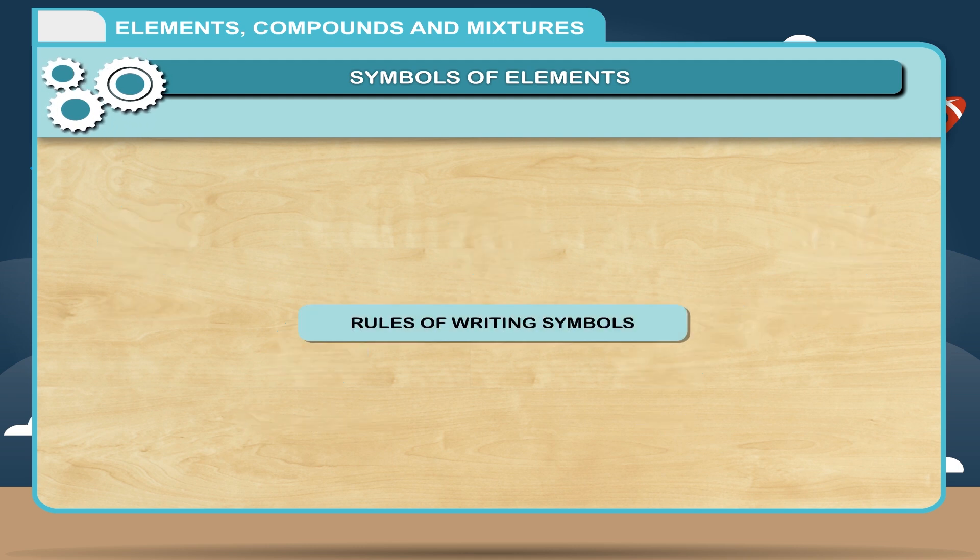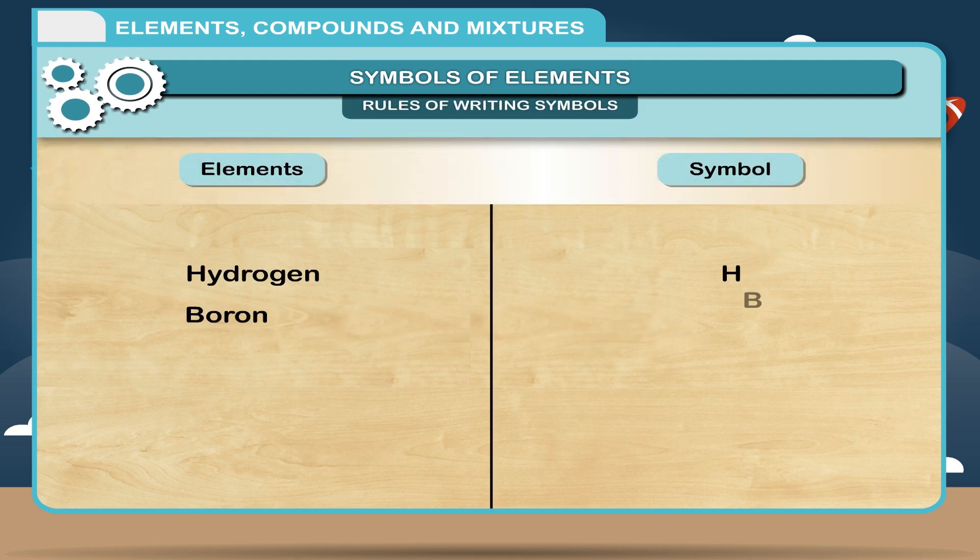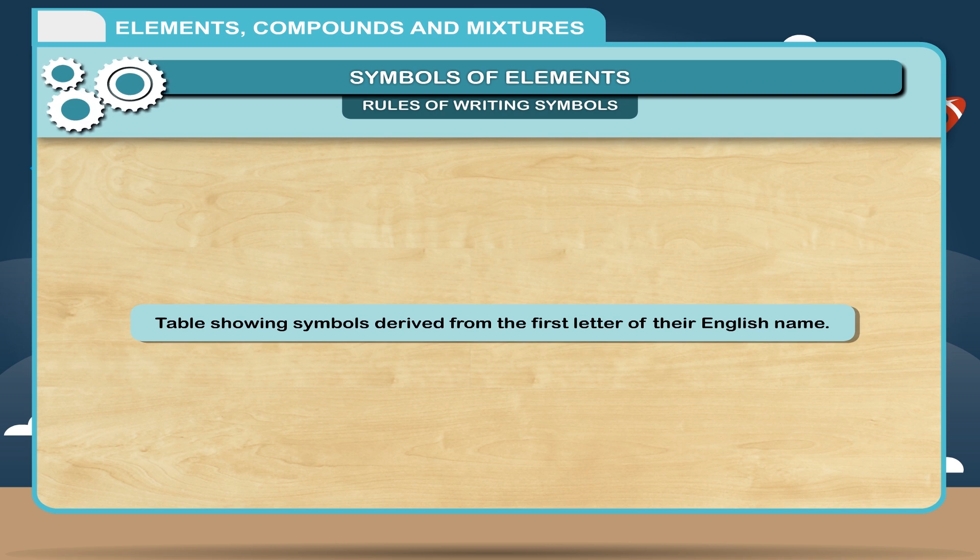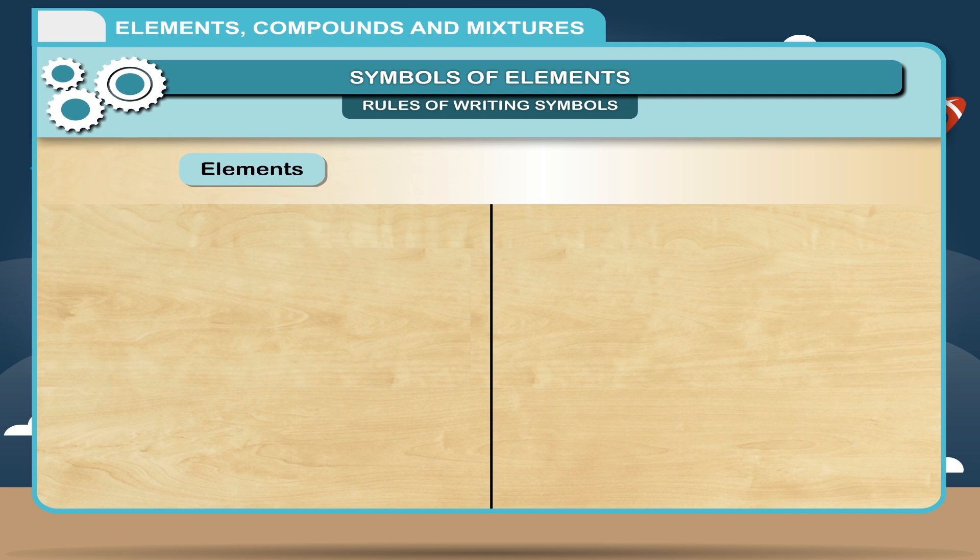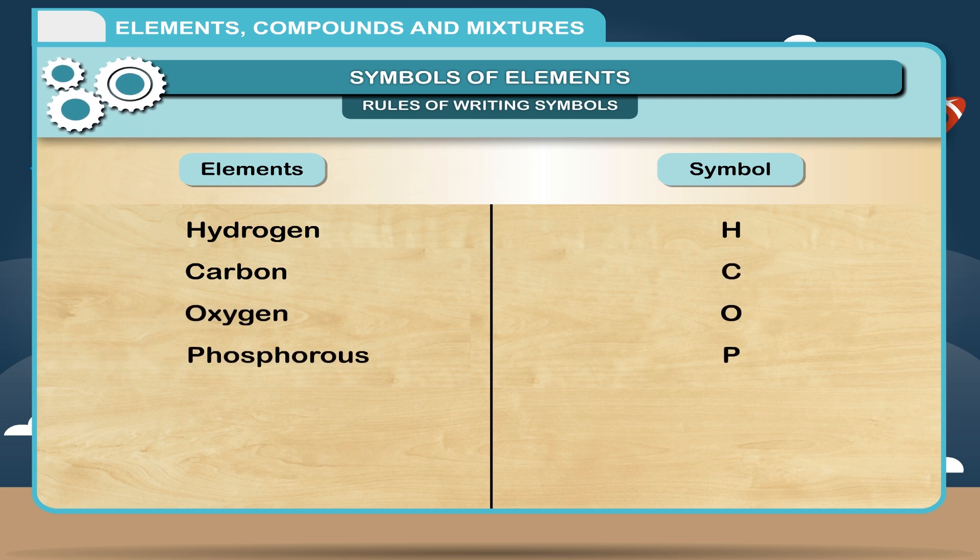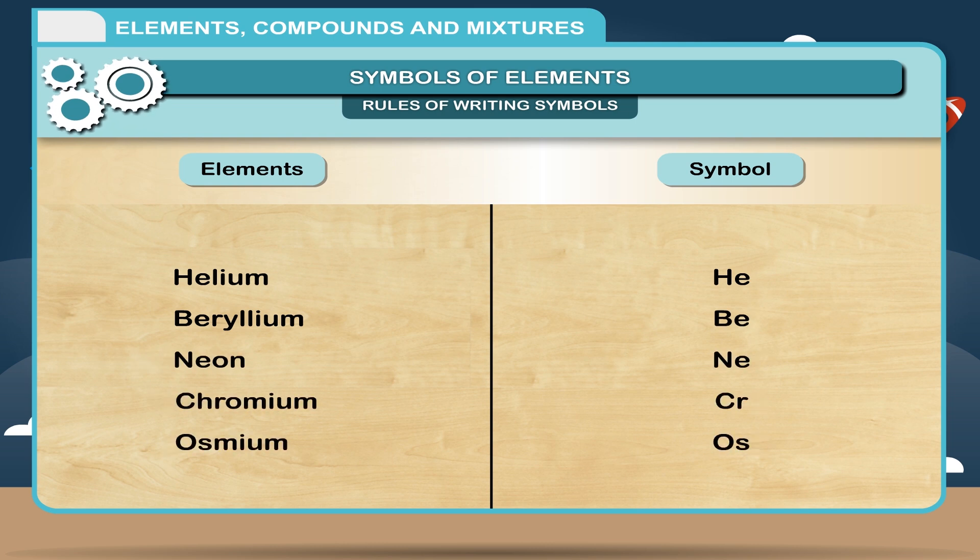Rules of writing symbols. Symbols of some elements are derived from the first letter of their English names and they are represented by capital letter. Table showing symbols derived from the first letter of their English name. Elements and symbols: Hydrogen H, Carbon C, Oxygen O, Phosphorus P, Sulfur S, Iodine I. If two or more elements have names beginning with the same letter, then one more letter is added to the first letter and the second letter will be small.